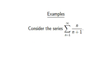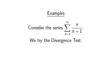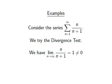Next, look at the series of n over n plus 1 for n ≥ 1. We notice that this series is not a p-series, geometric series, or alternating series, so we decide to try the divergence test. This test shows that the series does not converge, and as the underlying sequence is positive, the series diverges to infinity.